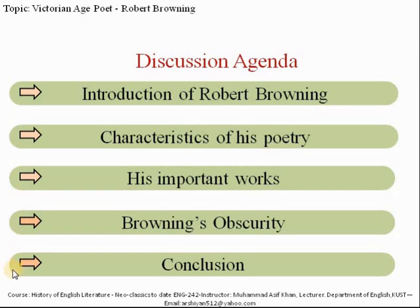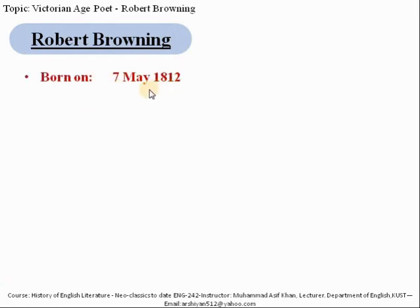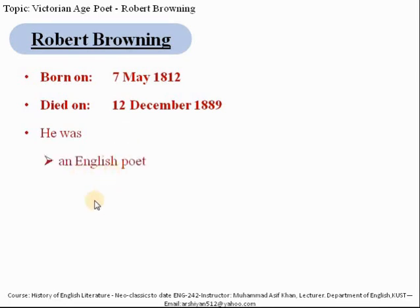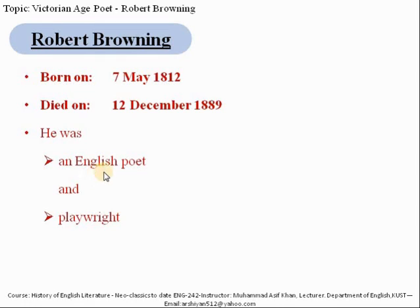Let's start with the introduction of Robert Browning. He was born on 7th May 1812 and died on 12th December 1889. He was an English poet and playwright, but he is known as a sage and philosopher poet. His poems are known for their irony, characterisation, dark humour, and he presents social commentary within historical settings, using challenging vocabulary and syntax.